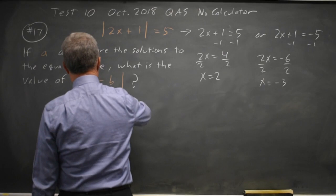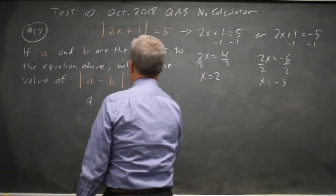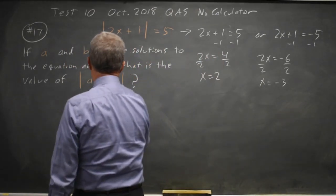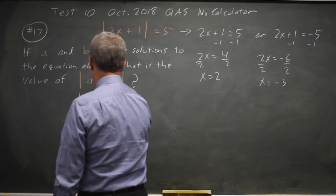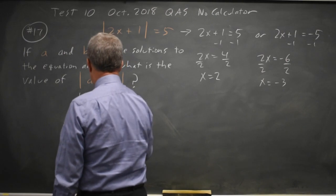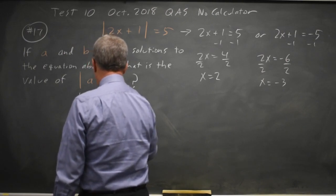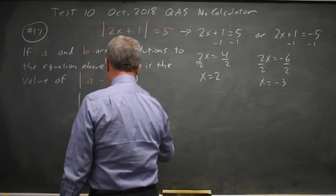A minus B is 2 minus negative 3, absolute value is 2 plus 3, absolute value is 5, which is of course 5. So that would be our answer.